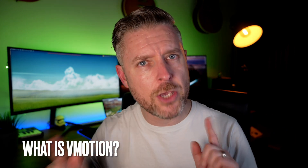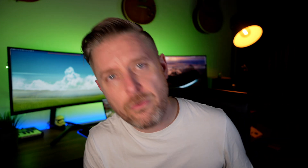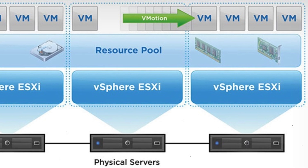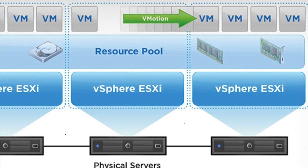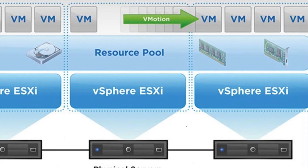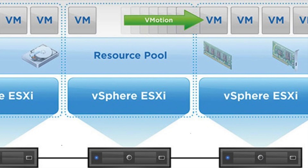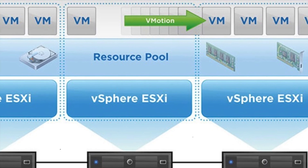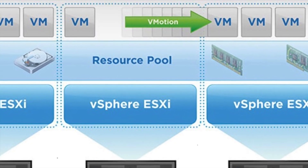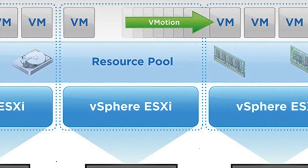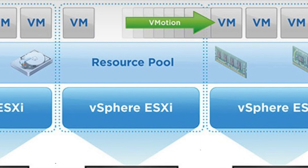What is vMotion? This one is quite common and a lot of people get confused. A migration is copying one VM to another host when the VM is powered off. When the VM is powered on, that is what a vMotion is — essentially copying a VM from one host to another while it's powered on, and that VM does not go down.